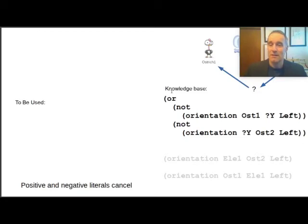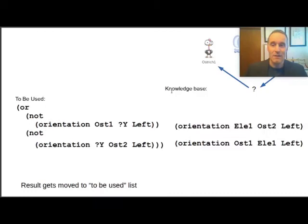Anytime we have a result leftover, we add it to to be used as something we're going to try to match again. That works out really well in this case. Now we've got the complicated thing we're trying to find a match for, and we've got some really easy matches for it. We're going to try to match this first literal. We find it matches beautifully. Orientation and orientation match, ostrich one matches with ostrich one, question mark y matches with elephant one, and left matches with left. We're left with a substitution that y equals elephant one.